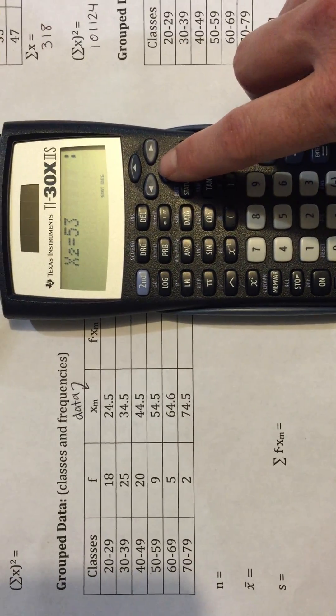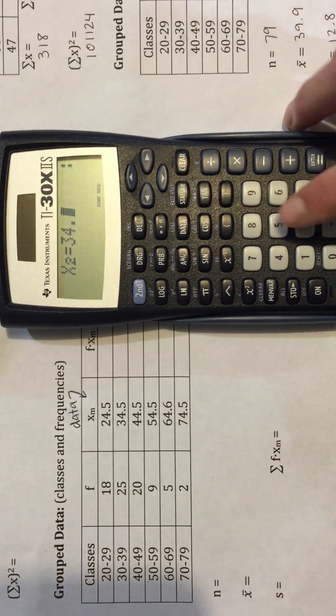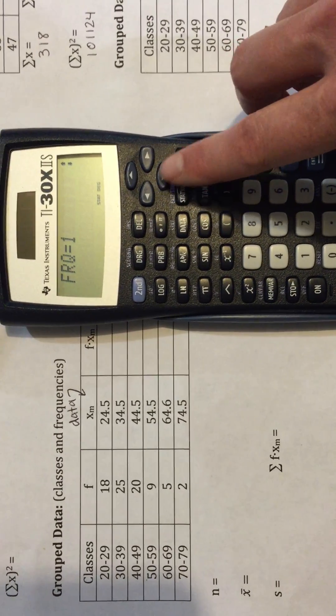Second data point, 34.5. Down arrow. Frequency, 25.